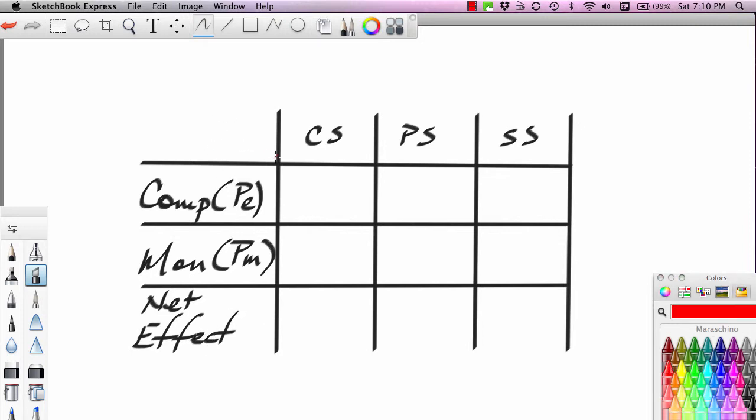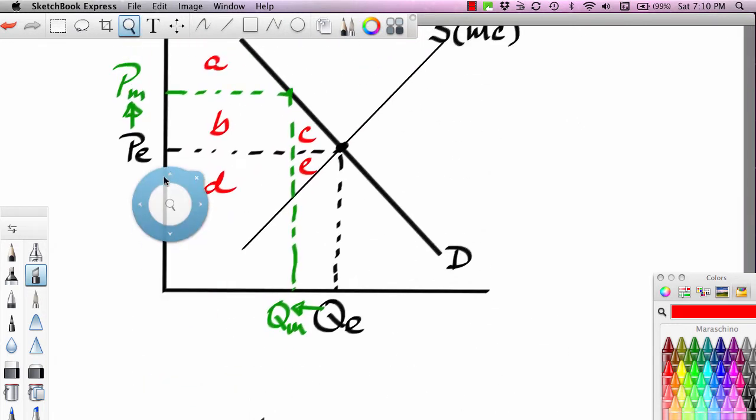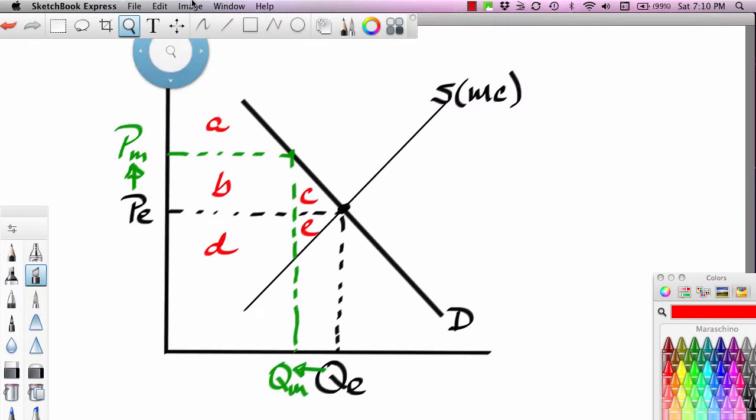And I'll go back to red. What do consumers get in a competitive setting? They get areas what? A, B, and C. You go, I don't know what you're talking about. Let me scroll up. Remember what consumer surplus is. Consumer surplus is what? Below the demand curve, above the price line. So A, A, A, B, and C.